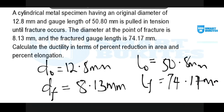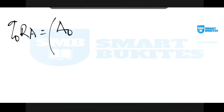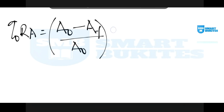We are told to determine the ductility in terms of percentage reduction in area and in terms of percentage elongation. These are the two formulas we use to determine the ductility of a material. The percentage reduction in area is equal to the original area minus the final area at the point of fracture, over the original area, times 100.